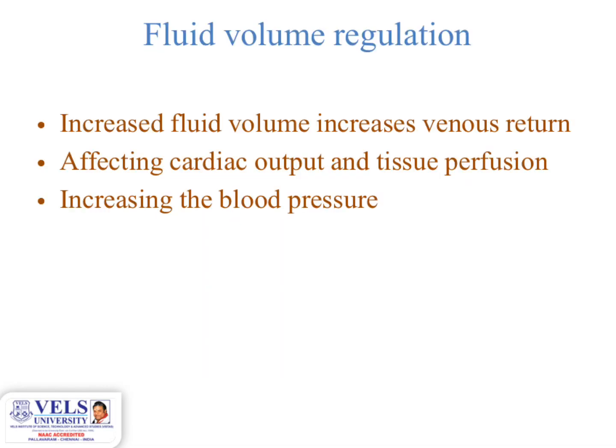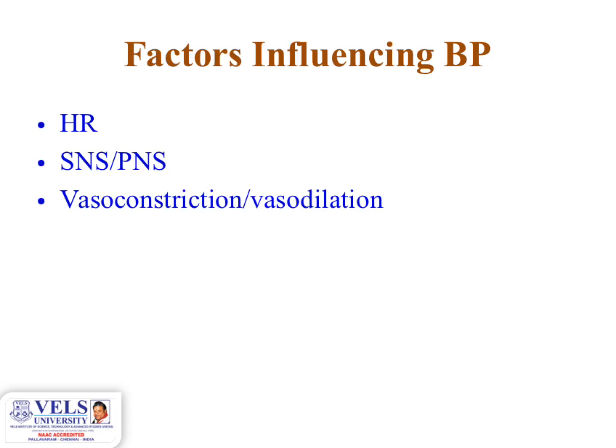Fluid volume regulation: increased fluid volume increases venous return, affecting cardiac output and tissue perfusion, thereby increasing blood pressure. Additional factors influencing blood pressure include heart rate, the sympathetic nervous system, the peripheral nervous system, vasoconstriction, and vasodilation.